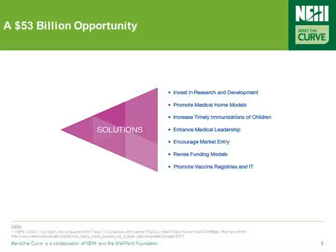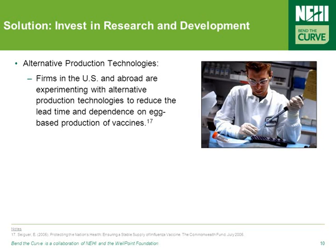Reducing vaccine underuse requires building a coordinated set of proven practices in the field, coupled with policy actions in the private and public sectors. The following slides talk more about how these proven practices and policy actions can help address this issue. Firms in the U.S. and abroad are experimenting with alternative production technologies to reduce the lead time and dependence on egg-based production of vaccines, all of which could help decrease vaccine shortages.